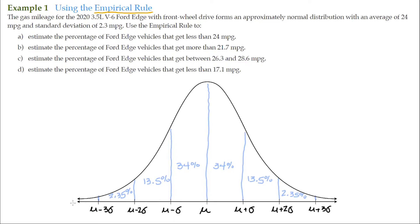Don't forget that since our number line goes off into infinity, so does the normal curve — it gets infinitely close to the x-axis as it goes off in either direction. So there's still a small area going off to infinity that has to be accounted for, and that's 0.15%. If I add up 0.15, 2.35, 13.5, 34, 34, 13.5, 2.35, and 0.15, that comes out to 100% — the entire area under the curve.